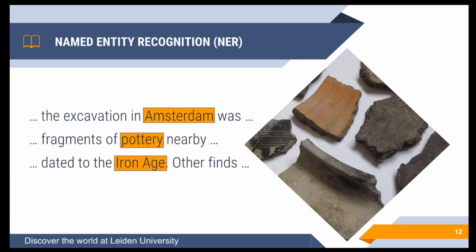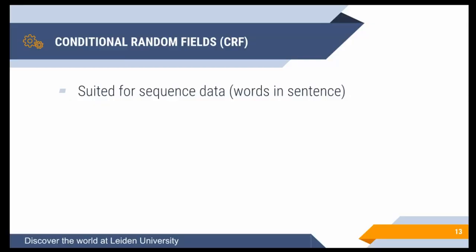Named entity recognition can be done in different ways. The main ones are a rules-based approach, where you write rules to find these words, or machine learning — a form of artificial intelligence — which is what I'm using in this project. Specifically I'm using conditional random fields (CRF), a type of machine learning particularly suited to sequence data — in this case, words in a sentence being a sequence. Like all supervised machine learning algorithms, it learns from examples: you feed it many examples and it will then be able to classify new text.